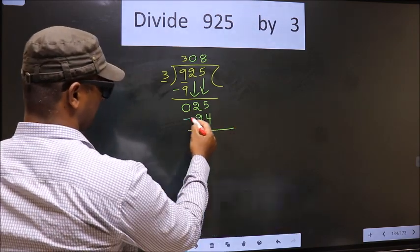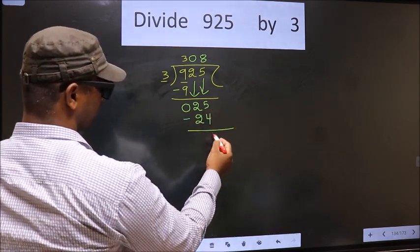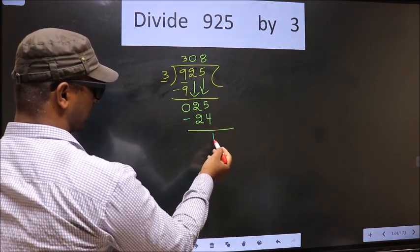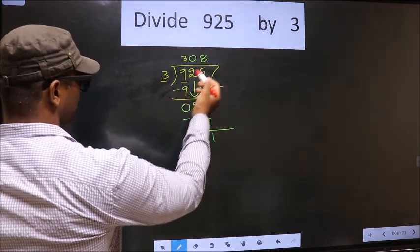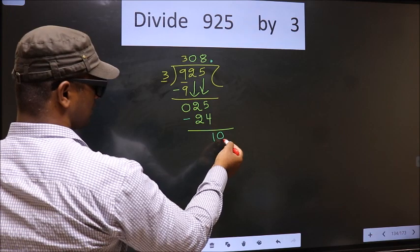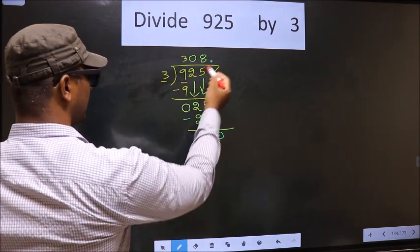Now you subtract 25 minus 24, which is 1. Over here we did not bring any number down, and 1 is smaller than 3, so you put a dot, take 0 here. So 10, a number close to 10 in the 3 table is 3 times 3, which is 9.